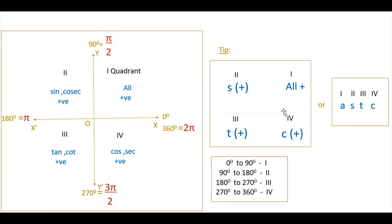A helpful tip: remember ASTC — All, Sin, Tan, Cos — for quadrants 1, 2, 3, 4. In the first quadrant all are positive, in the second only sine (and its reciprocal cosecant) is positive, in the third only tan (and cot), and in the fourth only cos (and secant). This makes it easy to quickly determine signs when solving problems.